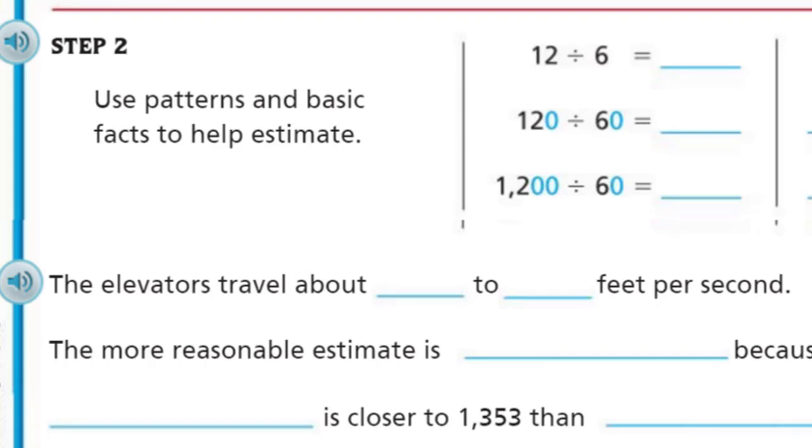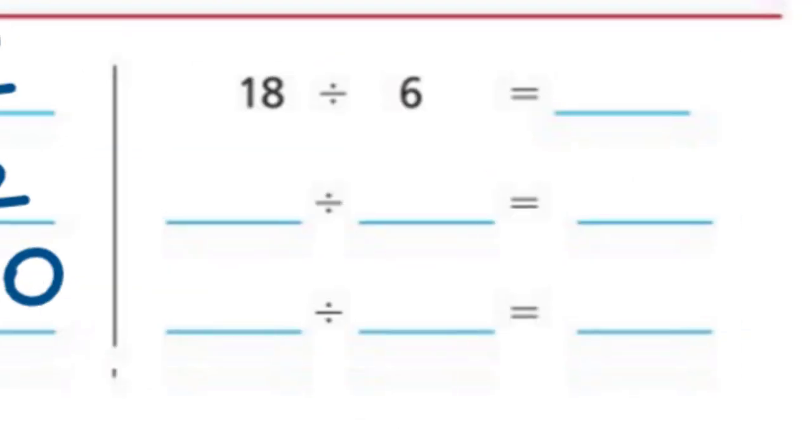Now, for step two, it states use patterns and basic facts to help estimate. There you go. That was the example we're talking about. 12 divided by 6 equals 2. Very simple. So, 120 divided by 60 is also going to equal 2, because we made both the dividend and the divisor 10 times greater. But now we have 1,200 divided by 60. It's not just going to be 2 because, remember, we have 2 powers of 10 here. We have 1 power of 10 here. That's just like saying 2 minus 1. So that means we're going to need to add on 1 zero here. Will that get us back? It will. 6 times 2 is 12. And 2 zeros gives us our 1,200.